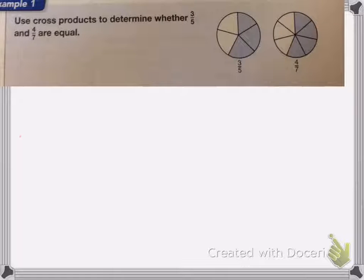Here we have use cross products to determine whether 3 fifths and 4 sevenths are equal. Looking at the picture, I can't tell, it's too close to call. So I'm going to use a cross product. I'm going to do 3 fifths and 4 sevenths.